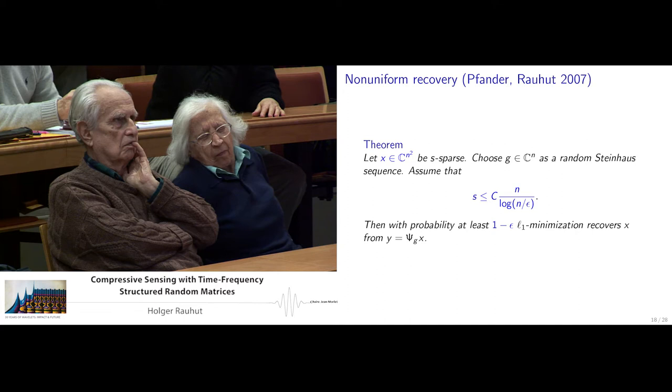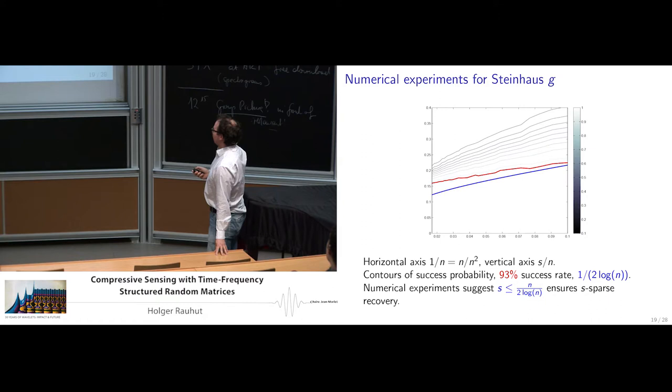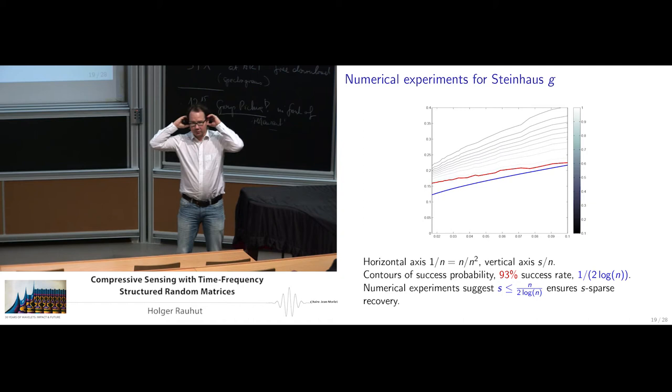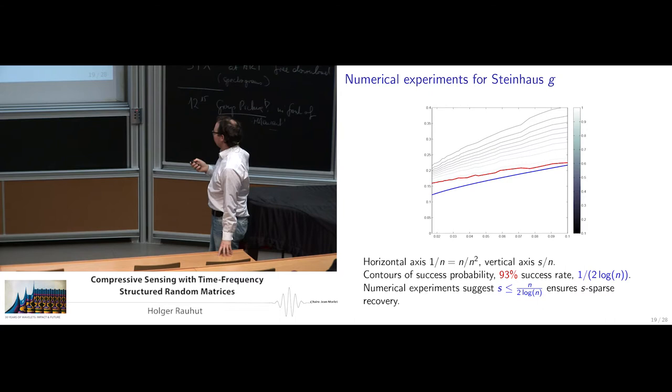Some numerical experiments. This axis is the number of measurements divided by the signal length, and the vertical axis is the sparsity divided by the number of measurements. These curves here separate the region where we get always recovery from the ones where you get never recovery. These curves indicate that this works as well as Gaussian random matrices. This is really a good matrix for recovery.